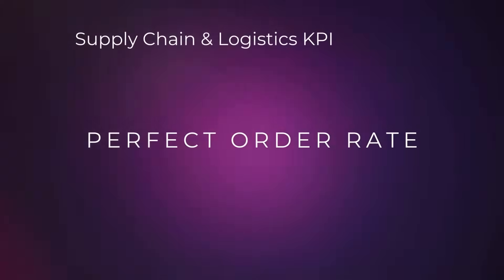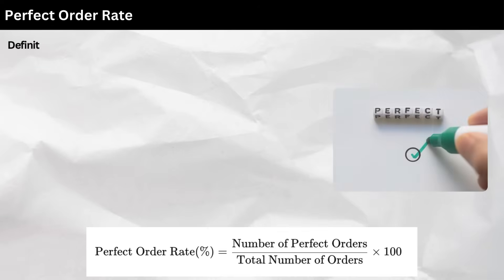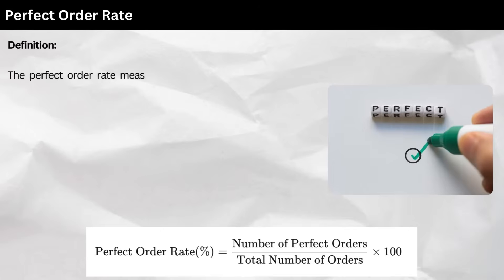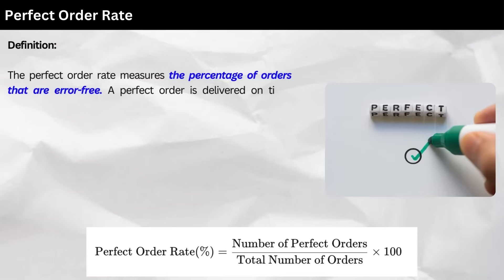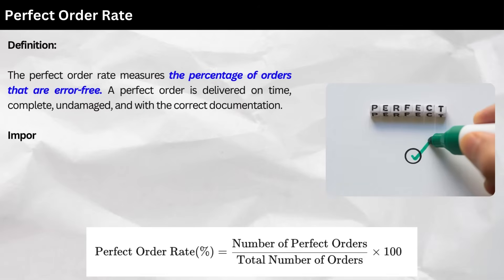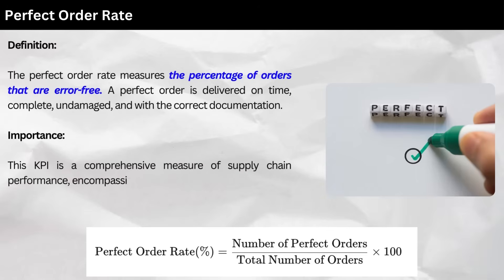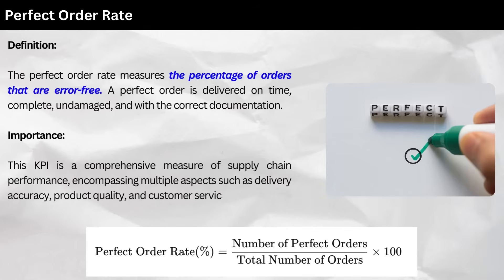4. Perfect Order Rate. Definition: the perfect order rate measures the percentage of orders that are error-free. A perfect order is delivered on time, complete, undamaged, and with the correct documentation. Importance: this KPI is a comprehensive measure of supply chain performance, encompassing multiple aspects such as delivery accuracy, product quality, and customer service. Calculation: as follows.